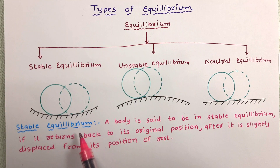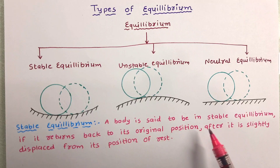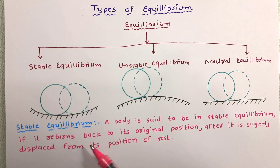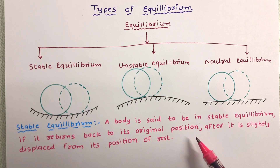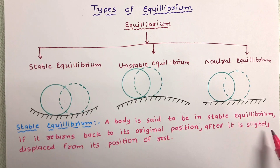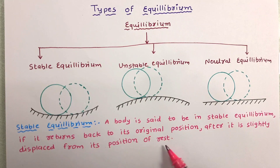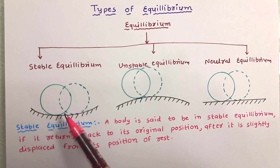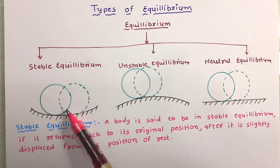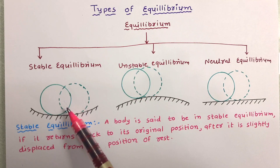Stable equilibrium: a body is said to be in stable equilibrium if it returns back to its original position after it is slightly displaced from its position of rest. As in this case, after the slight displacement from its position of rest, it will return back to its original position.